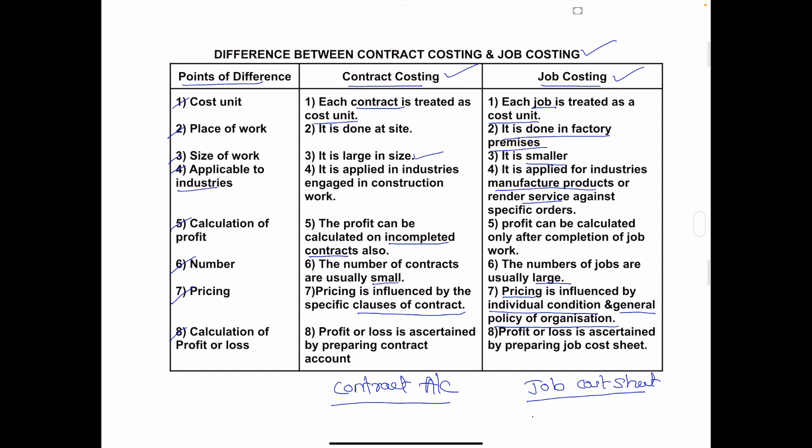So these are the 8 differences between contract costing and job costing: 1) Cost unit, 2) Place of work, 3) Size of work, 4) Applicable industries, 5) Calculation of profit, 6) Number of contracts or orders, 7) Fixing the prices, and 8) Calculation of profit and loss. Hope you got the topic. If you have any doubt, let me know in the comment section. Do like, share, and subscribe to my channel. Thanks for watching.